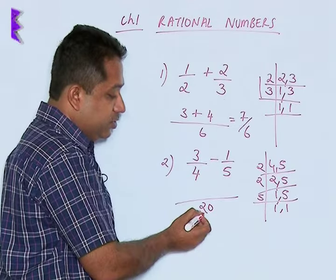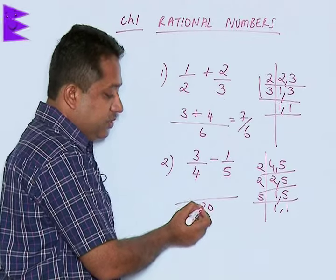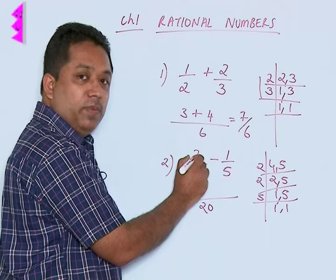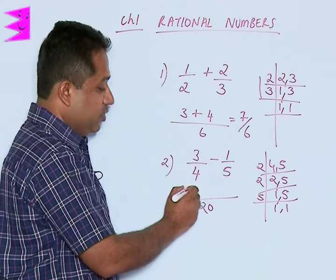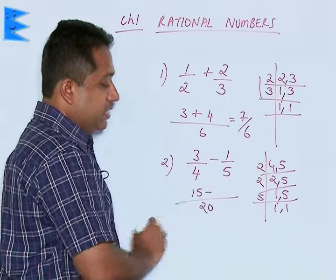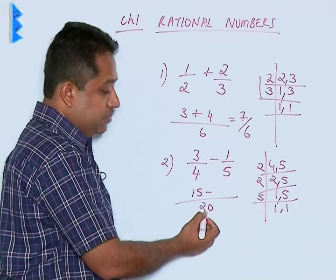Now we check 4 goes how many times in 20? 4 goes 5 times, 5 is multiplied by the numerator here. So 5 into 3, we are going to get 15 minus. We check 5 goes how many times in 20 here?